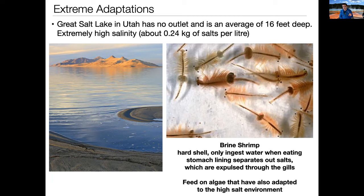The brine shrimp have two primary adaptations. First, they have an extremely hard outer shell that prevents them from absorbing water directly into their bodies. Second, the water they do ingest — only during feeding — goes to their stomach lining, which is very efficient at separating the salt out of the water rather than letting it enter the bloodstream. Then they expel all that salt out through their gills. This is how brine shrimp have adapted where nothing else has, and so they exist in droves in the Great Salt Lake — so many that they're harvested on an annual basis as a natural resource, used in fish feeding.